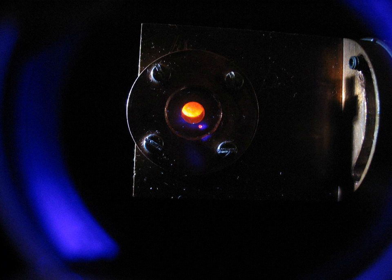Curium is a hard, dense, silvery metal with a relatively high melting point and boiling point for an actinide. Whereas it is paramagnetic at ambient conditions, it becomes antiferromagnetic upon cooling, and other magnetic transitions are also observed for many curium compounds.